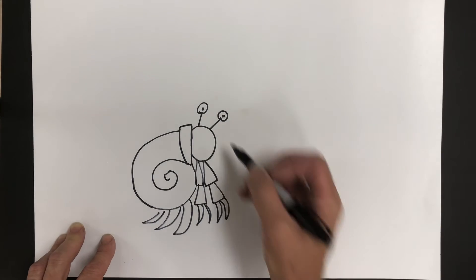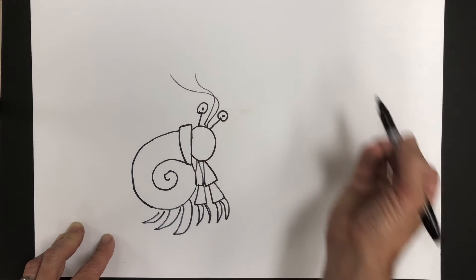Next, I'm going to add the tentacles, which are like little curvy lines coming out of the top.